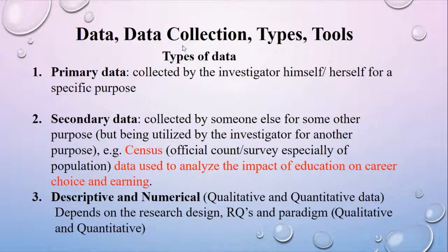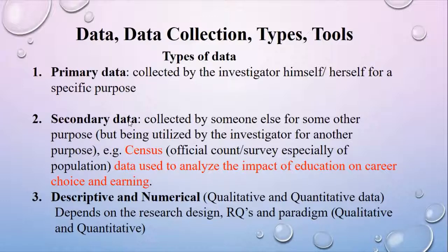There are two types of data for conducting a research study. The first one is primary data and the second one is secondary data. Primary data is collected by the investigator or researcher for doing any specific research study — the researcher himself collects this data. Secondary data is not collected by the researcher but by anyone for any other purpose; however, it can be utilized by the investigator for doing a research study.